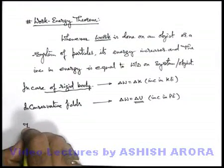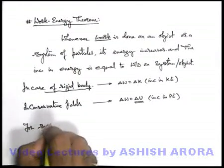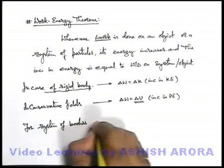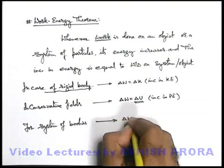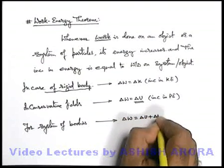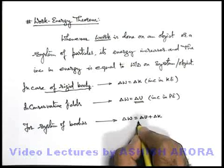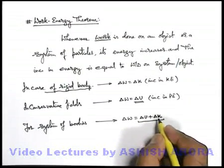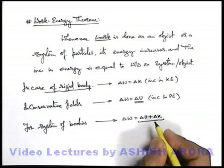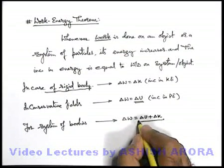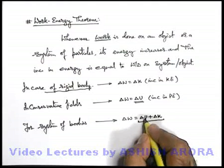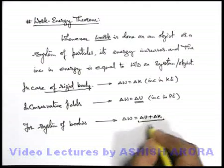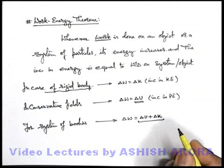Similarly, for various systems of particles or systems of bodies, whenever some work is done on the system it can be written as ΔU + ΔK. It may increase both potential and kinetic energy, it may increase only kinetic energy, or it may increase potential energy only. So whenever some work is done, energy is supplied — a part of it can go to increase the potential energy and the remaining part is used in increasing kinetic energy, or both, or at an individual level also.